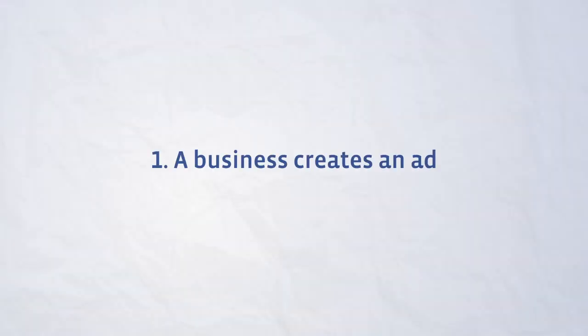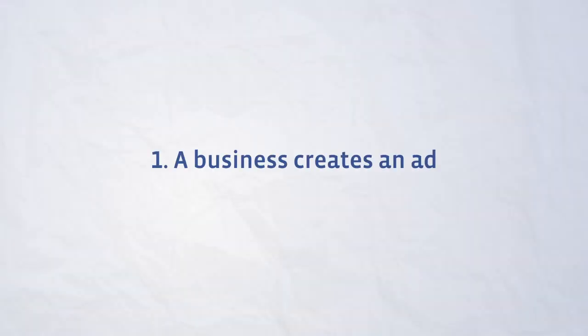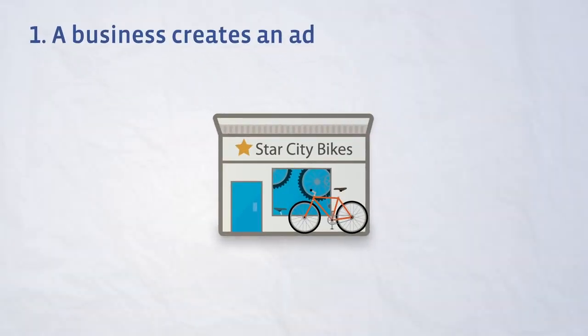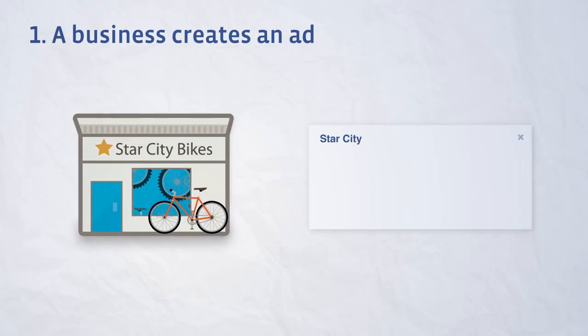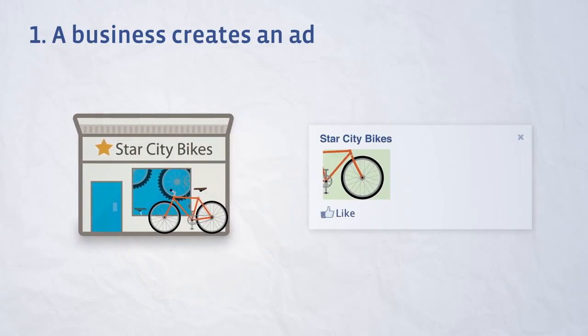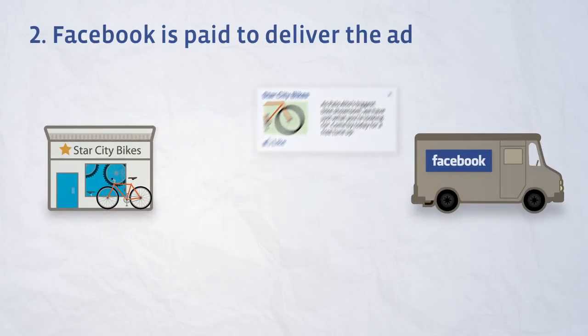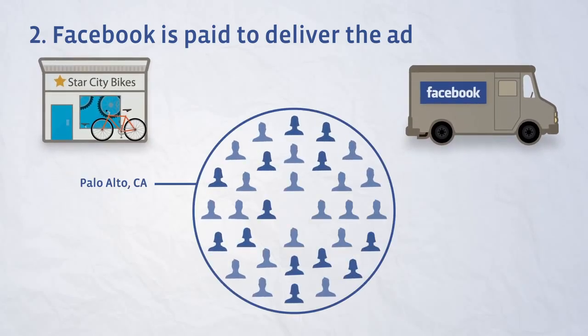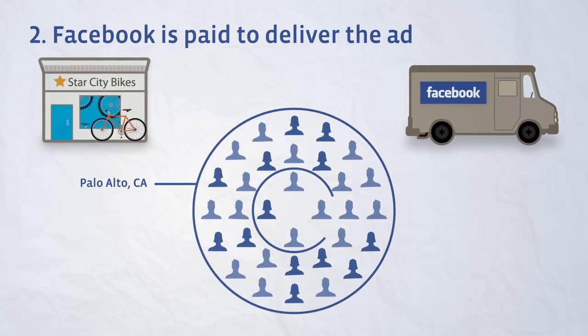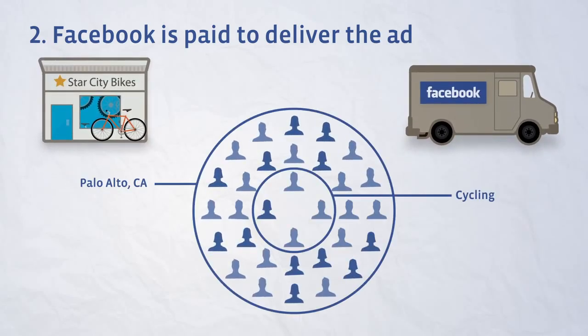Here's how it works. First, a business creates an ad. Let's say a bike shop opens in your neighborhood. The owner creates an ad to get people to come in and get a tune-up. Second, Facebook is paid to deliver the ad. The owner sends the ad to Facebook and describes who should see it — people who live nearby and like cycling.